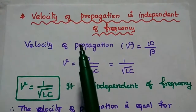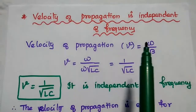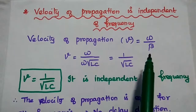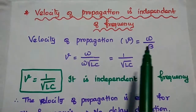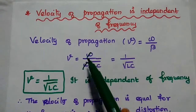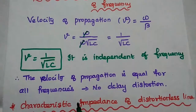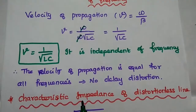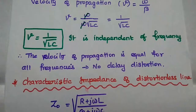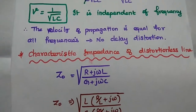Next we prove that velocity of propagation is independent of frequency for a distortionless line. Taking the formula V equals omega by beta and substituting the value of beta as omega into square root of lc, we divide omega by omega. Finally, we get V equal to 1 by square root of lc, which is independent of frequency. Since it is independent of frequency, the velocity of propagation is the same for all frequencies in that transmission line. Therefore, there is no delay distortion.